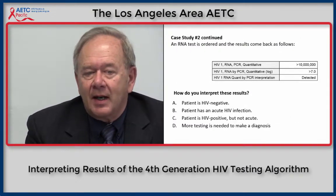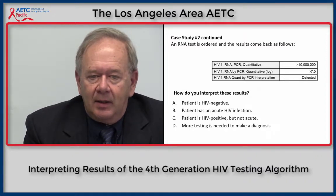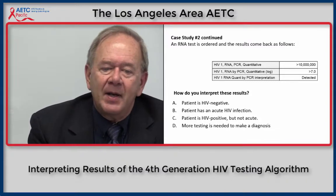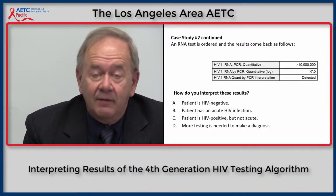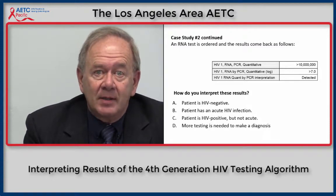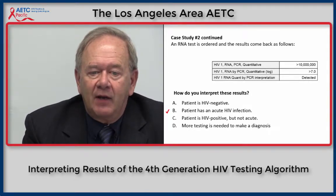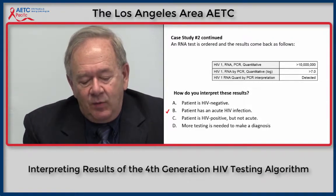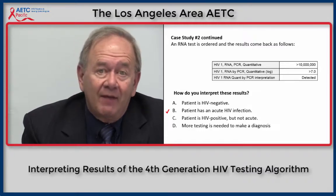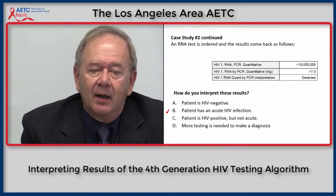An RNA test is ordered and results come back: HIV-1 RNA by PCR is greater than 10 million copies — a log result of greater than 7 — and RNA is detected. The correct interpretation is B: the patient has acute HIV infection. It is very important to discuss these screening results with this patient. Because his viral load is extremely high, he is in early infection and extremely infectious. You need to advise him to use condoms, avoid sharing needles, and make a follow-up plan to link him for immediate care to his Ryan White Clinic.